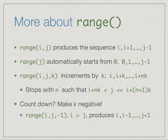Having a step also allows us to count down. All we have to do is make the step negative. So if we say i, j, -1, then provided we start with a value which is bigger than the final value, we will start with i, produce i-1, i-2 and so on and we will stop with j+1.